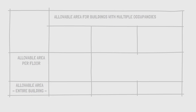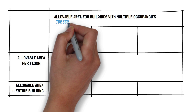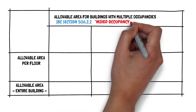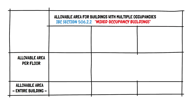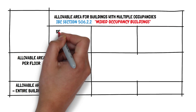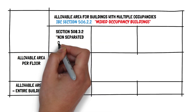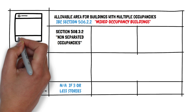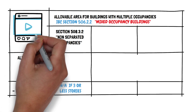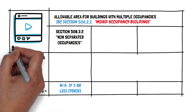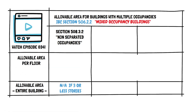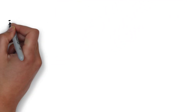Let's get back to the video. Section 506.2.2 of the 2021 IBC, titled Mixed Occupancy Buildings, provides us with what we need to know to figure out the allowable building area. First, let's start with non-separated occupancies, which has to do with Section 508.3.2. An entire video has been dedicated to this non-separated areas topic — check out episode 34 for more information.